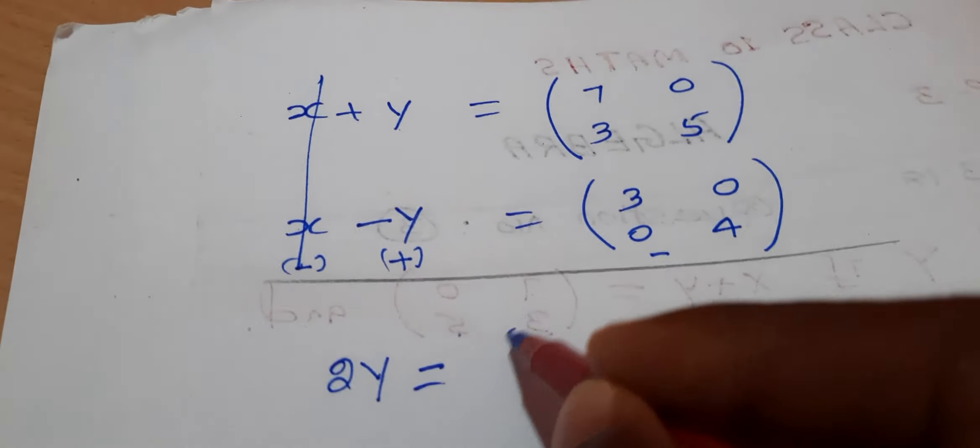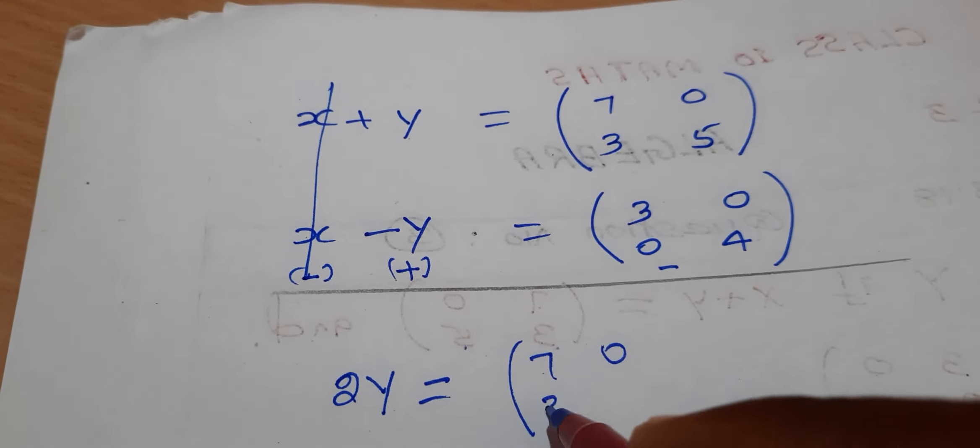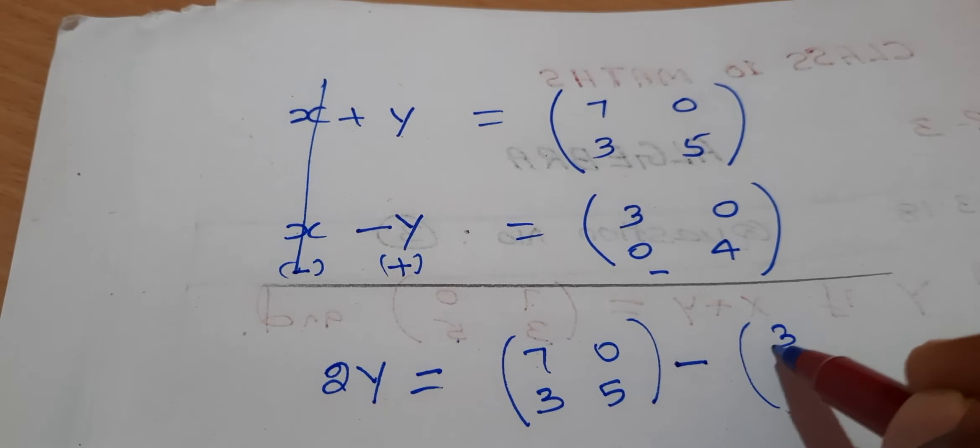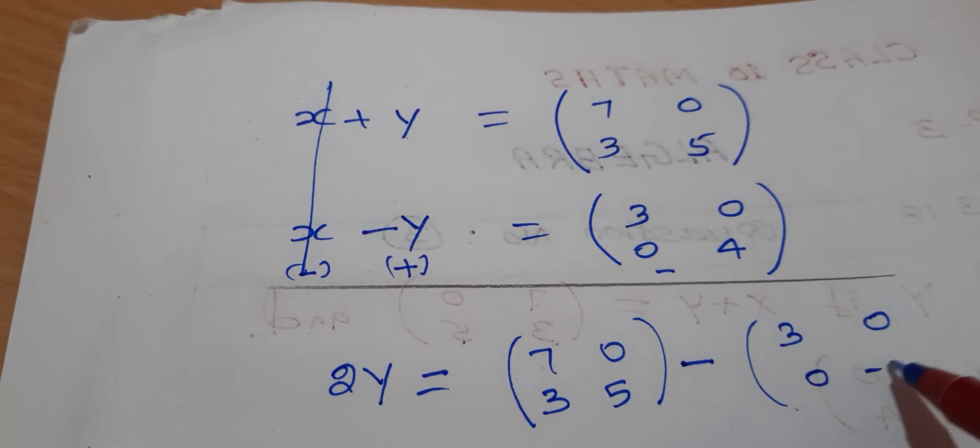Now to find y, we have 2y equals (7, 0; 3, 5) minus (3, 0; 0, 4).